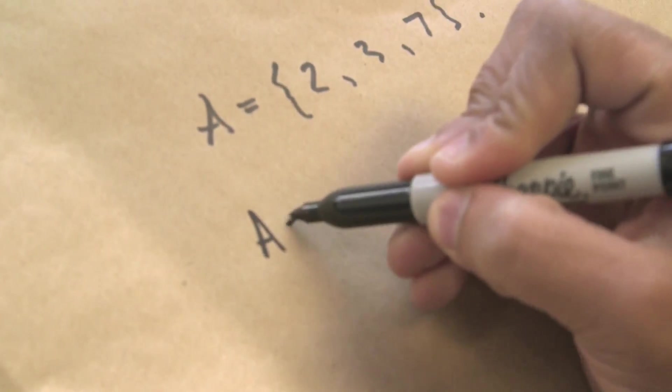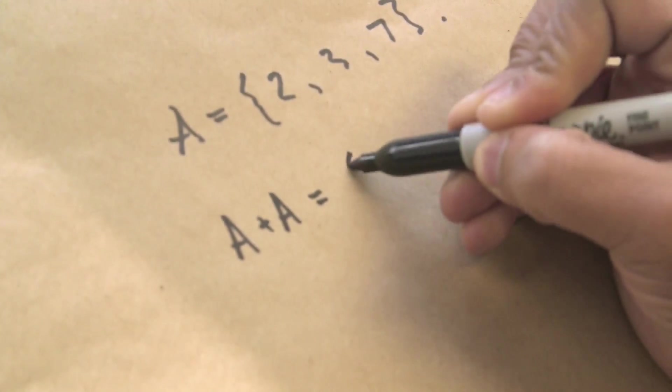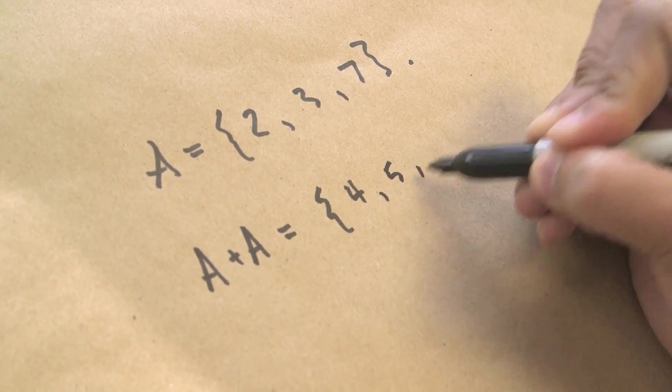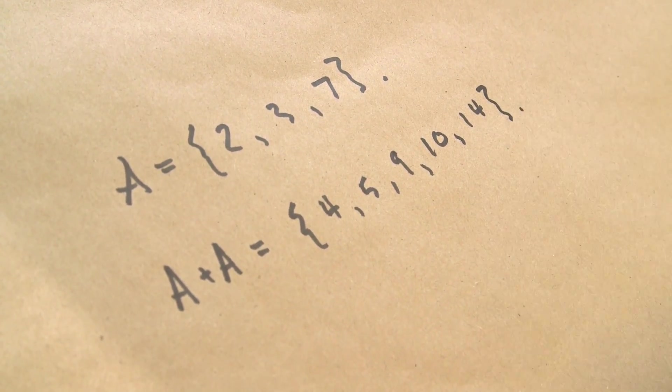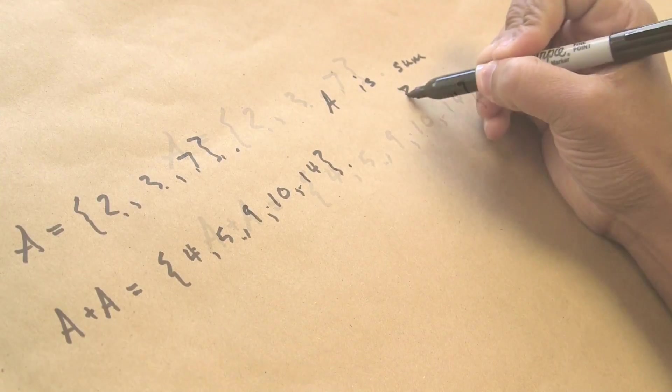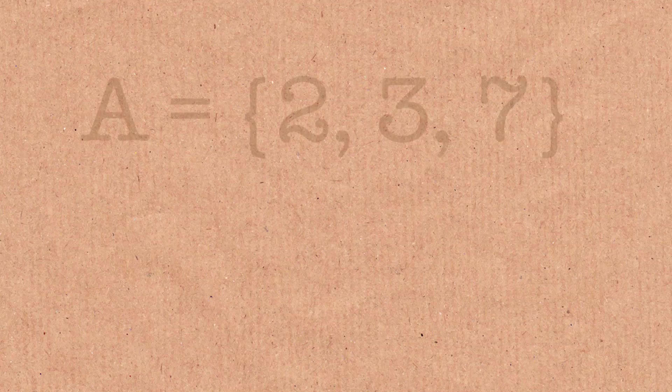So let's look at A plus A. And so this will be 4, 5, 9, 10, and 14. You see that no numbers are shared between these two sets. So A is sum-free.